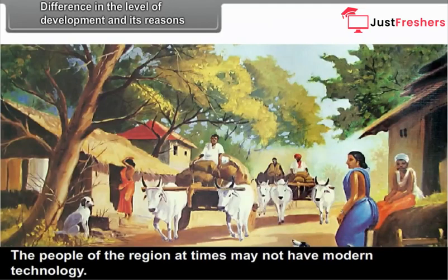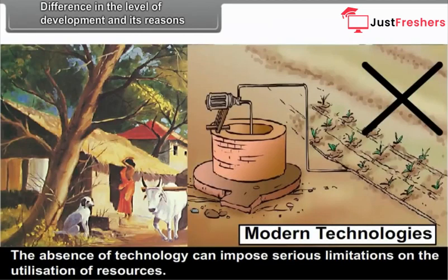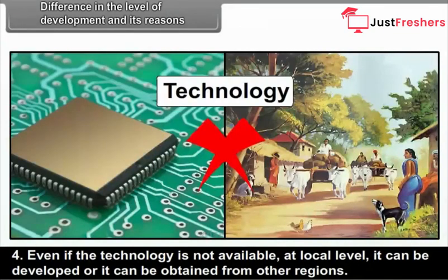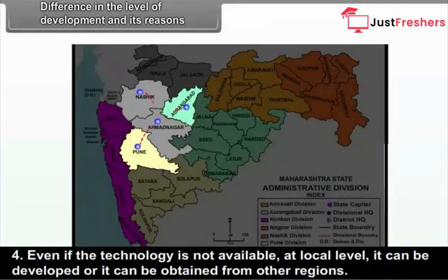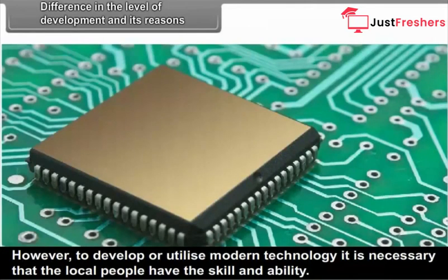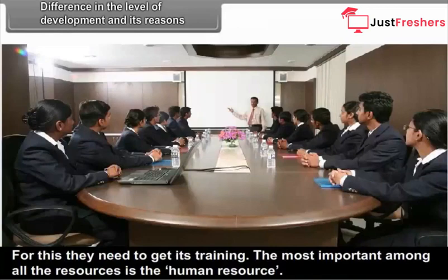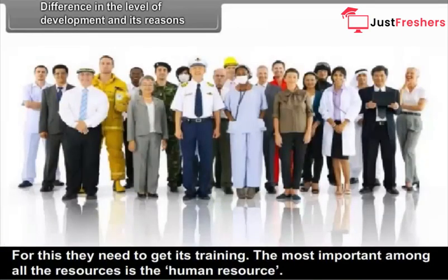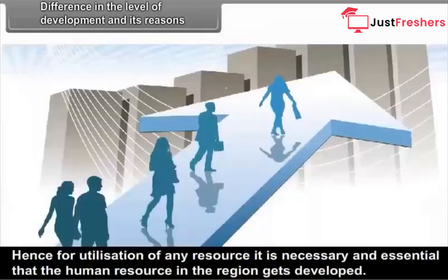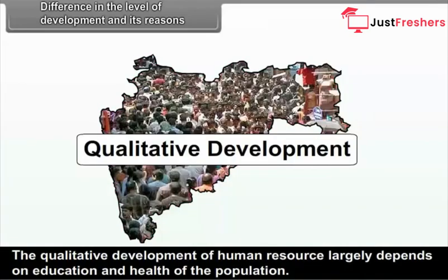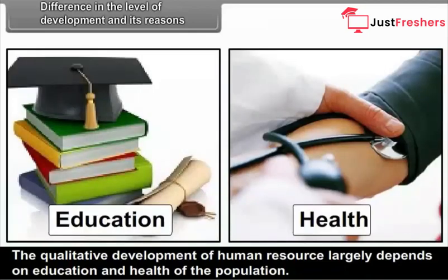The people of the region at times may not have modern technology, and the absence of technology can impose serious limitations on the utilization of resources. Even if the technology is not available locally, it can be developed or obtained from other regions. However, to develop or utilize modern technology, it is necessary that the local people have the skill and ability, requiring training. The most important among all resources is the human resource. Hence, for utilization of any resource, it is necessary and essential that the human resource in the region gets developed, and the qualitative development of human resource largely depends on education and health of the population.